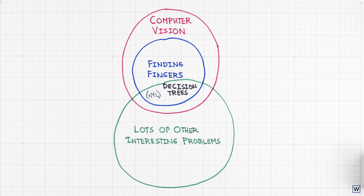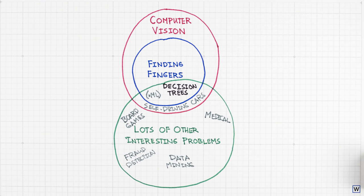These intersections mean that the approach we'll use to build our decision tree applies far beyond finding fingers and images. Today, decision trees can play chess, detect car crashes, diagnose disease, predict heart attacks, detect credit card fraud, reveal hidden structure and data, and do lots and lots of other useful things, all with a single algorithm. Next time, we'll start building our tree.